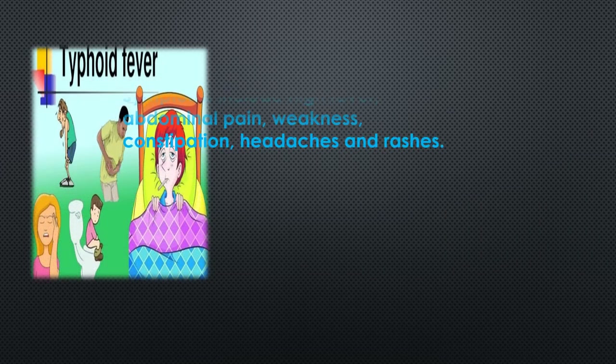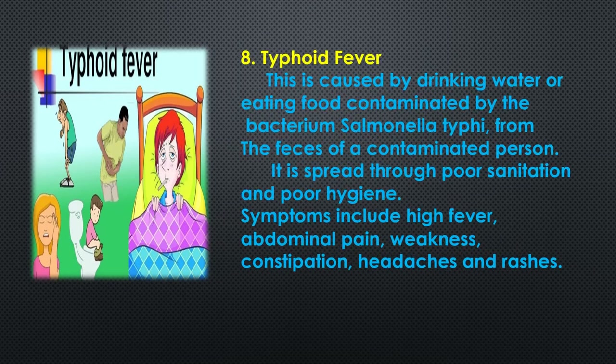The last one is typhoid fever. It is caused by drinking water or eating food contaminated by the bacterium Salmonella typhi from the presence of a contaminated person. It is spread through poor sanitation and poor hygiene. Symptoms include high fever, abdominal pain, weakness, constipation, headaches, and rashes.